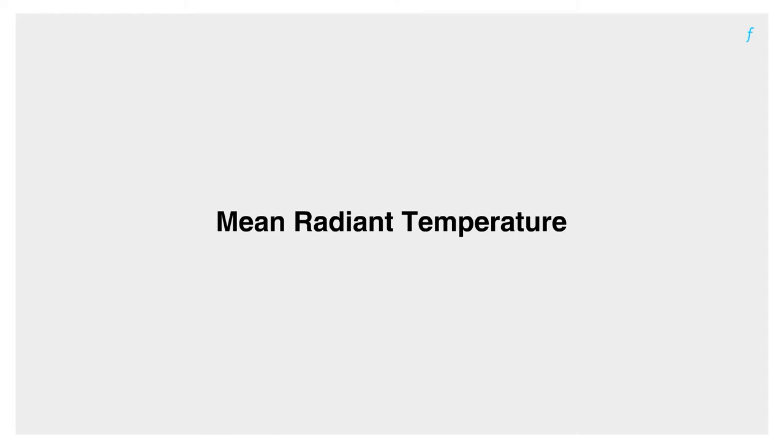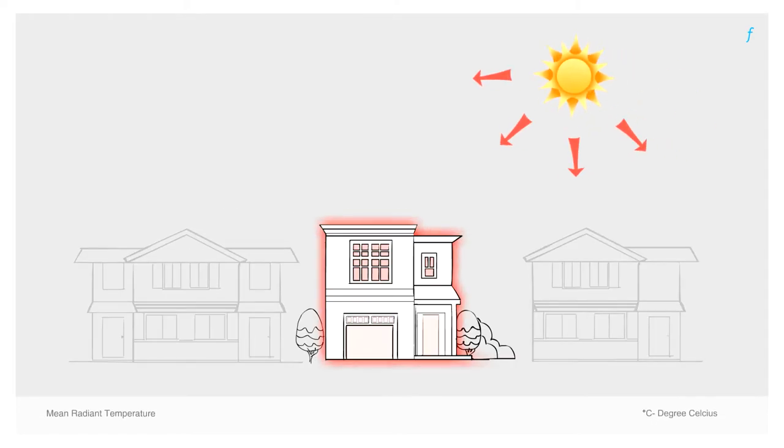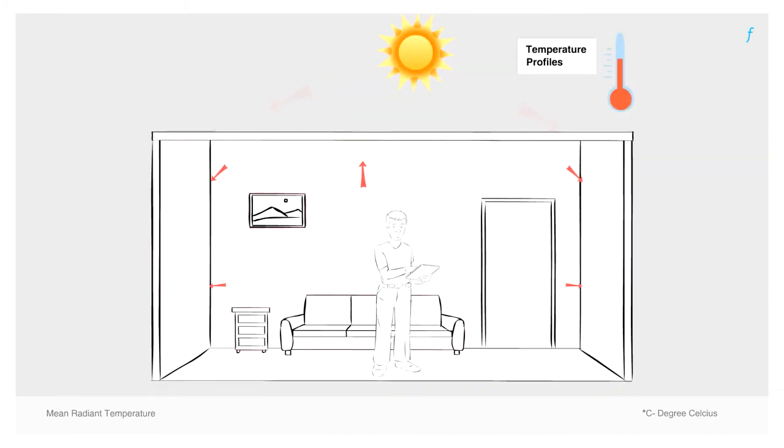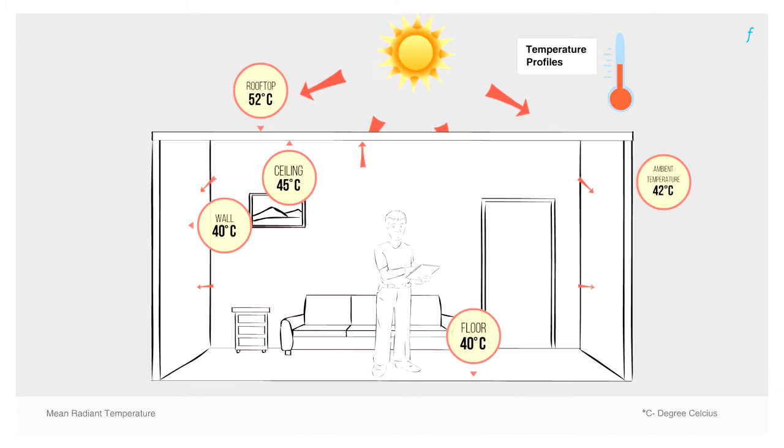Let's now speak about the mean radiant temperature. We all know that heat flows from a hotter body to a cooler body by principle. In any room, there is constant heat exchange between the walls, roof, floor, other objects, people, etc. The weighted average of the temperatures at which the surfaces of all such objects in a room radiate heat is the mean radiant temperature.